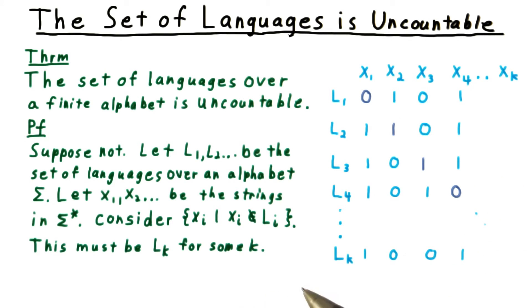Since we're assuming that the set of languages is countable, this language must be Lk for some k. But is xk in Lk or not? You see from the table here, we've defined the row Lk such that in every column, the entry is just the opposite of what is on the diagonal.